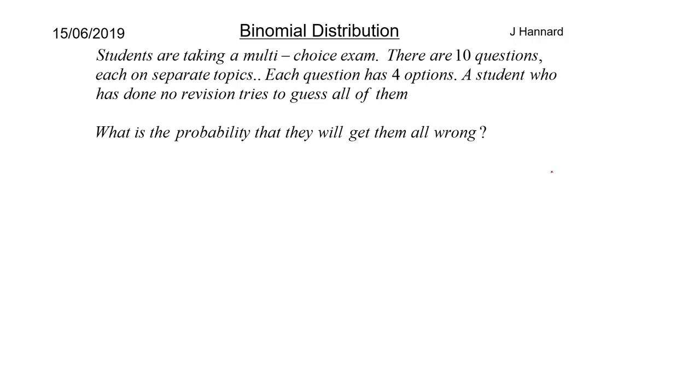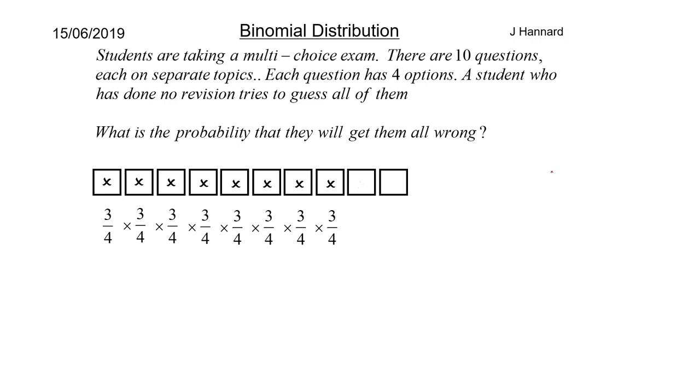What's the probability that they get them all wrong? You might think it's the same. It's not because you have a bigger chance of getting it wrong. You have a three in four chance of getting it wrong. So this time it's going to be three to the ten over four to the ten which is three over four all to the ten.